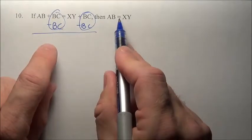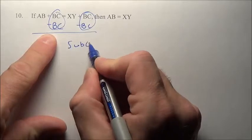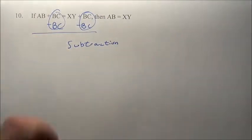So what did we do here to get here? We subtracted BC. So the property we used was subtraction.